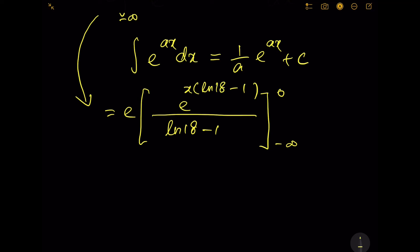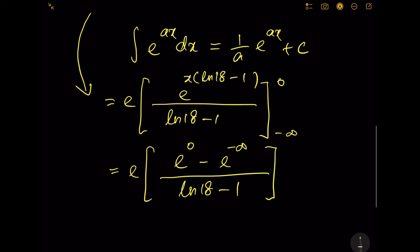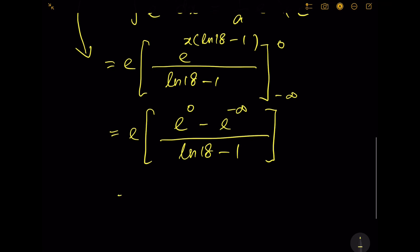Now we replace the boundaries: e^0 minus e^(-∞) into the equation. We know e^0 is 1 and e^(-∞) is 0, so we have this answer.